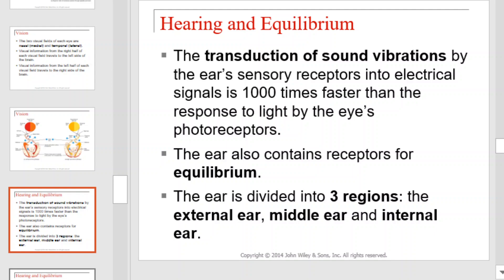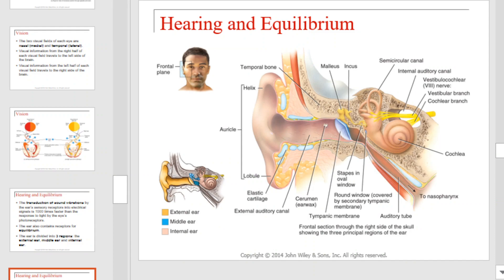The transduction of sound vibrations by the ear's sensory receptors into electrical signals is 1,000 times faster than the response to light by the eye's photoreceptors. The ear contains receptors for equilibrium as well as hearing. The ear is divided into three regions: the external ear, middle ear, and internal ear. This graphic will provide you with all of the important structures of the ear — take a moment to review each labeled structure.